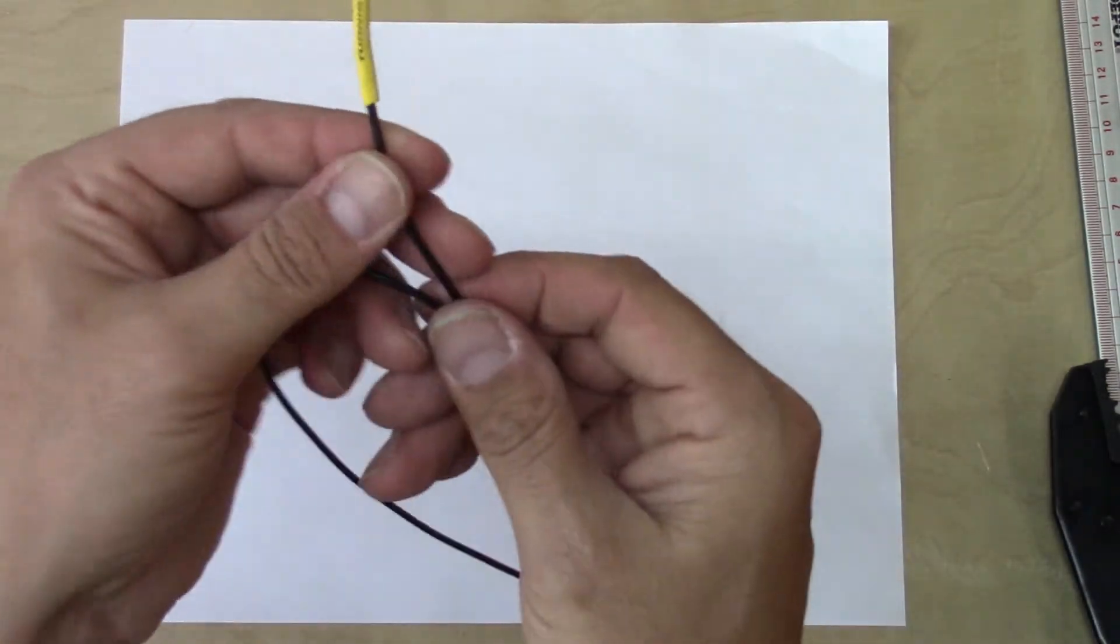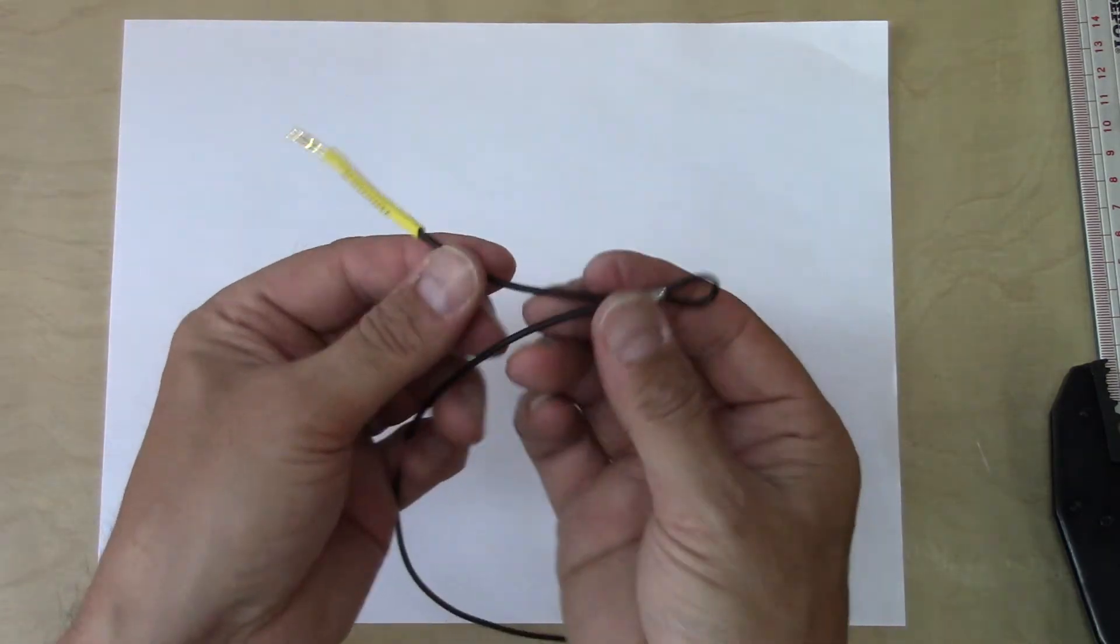When we're done, we have a nice heat shrink wrapped around our banana connector and our link.